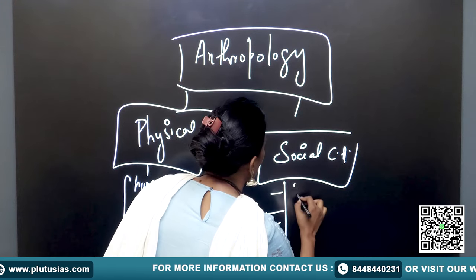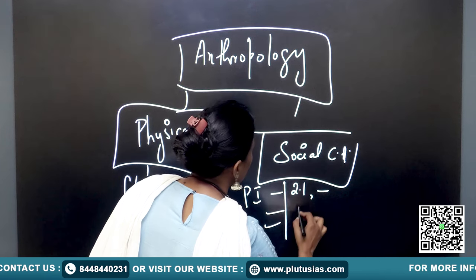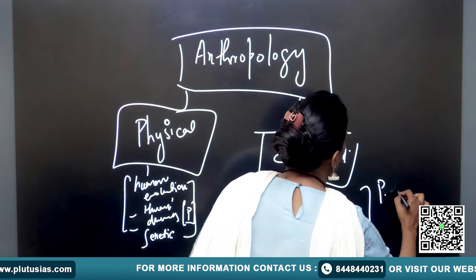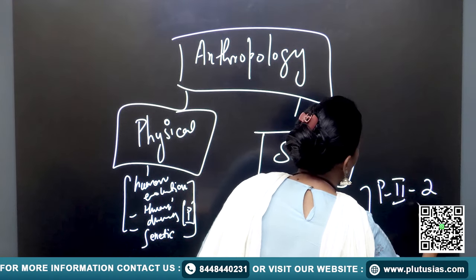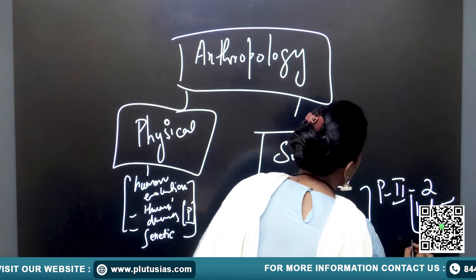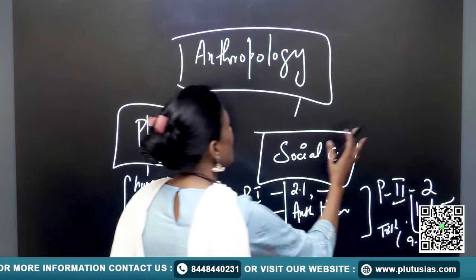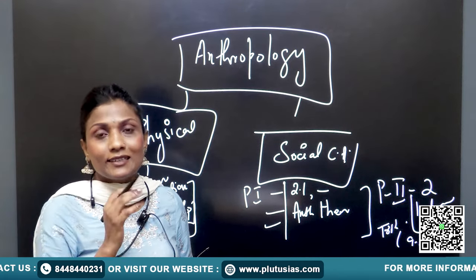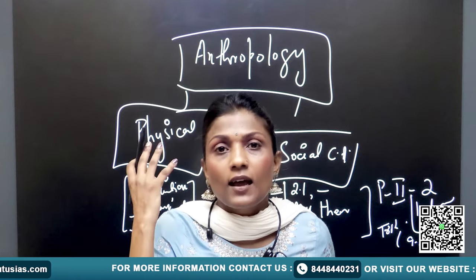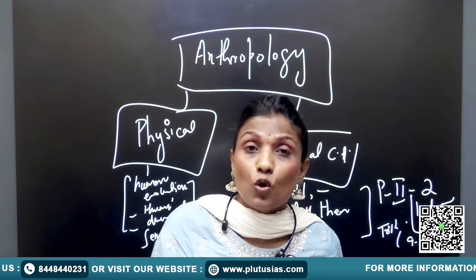For UPSC, social cultural anthropology starts from topic 2.1, which we discuss today, and in Paper 1 it goes till anthropological theories. In Paper 2, from topic 2 on Indian population — the demographic profile — all the way to tribal anthropology falls under social cultural anthropology.